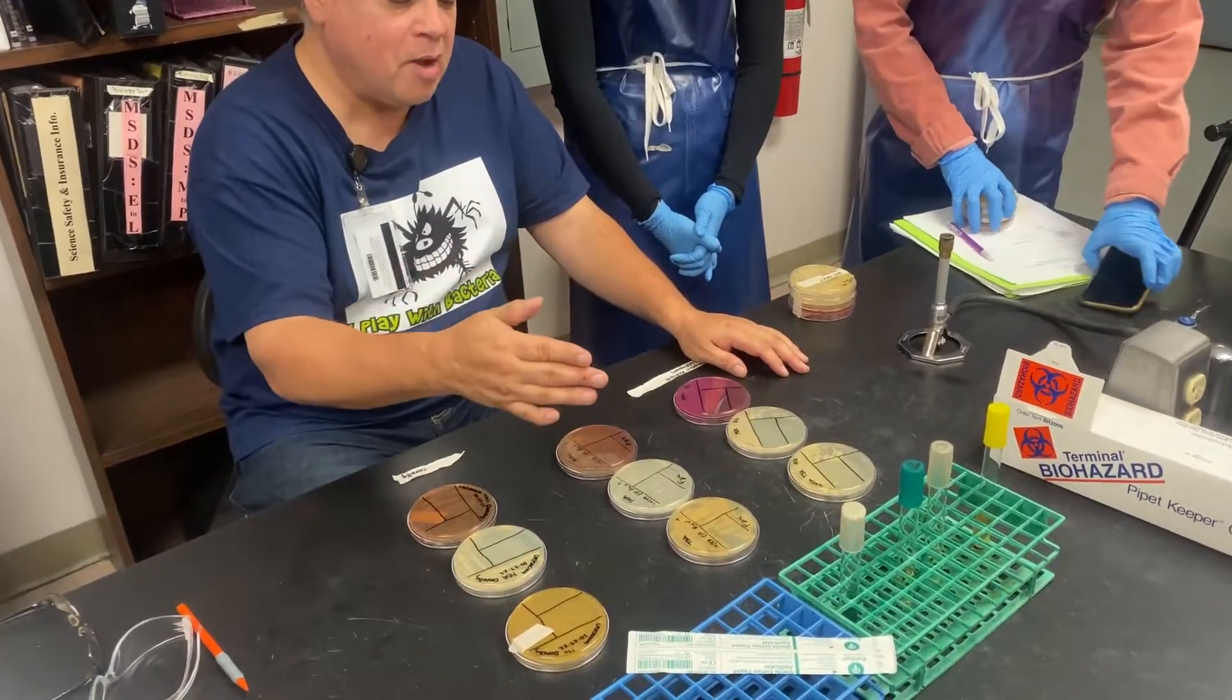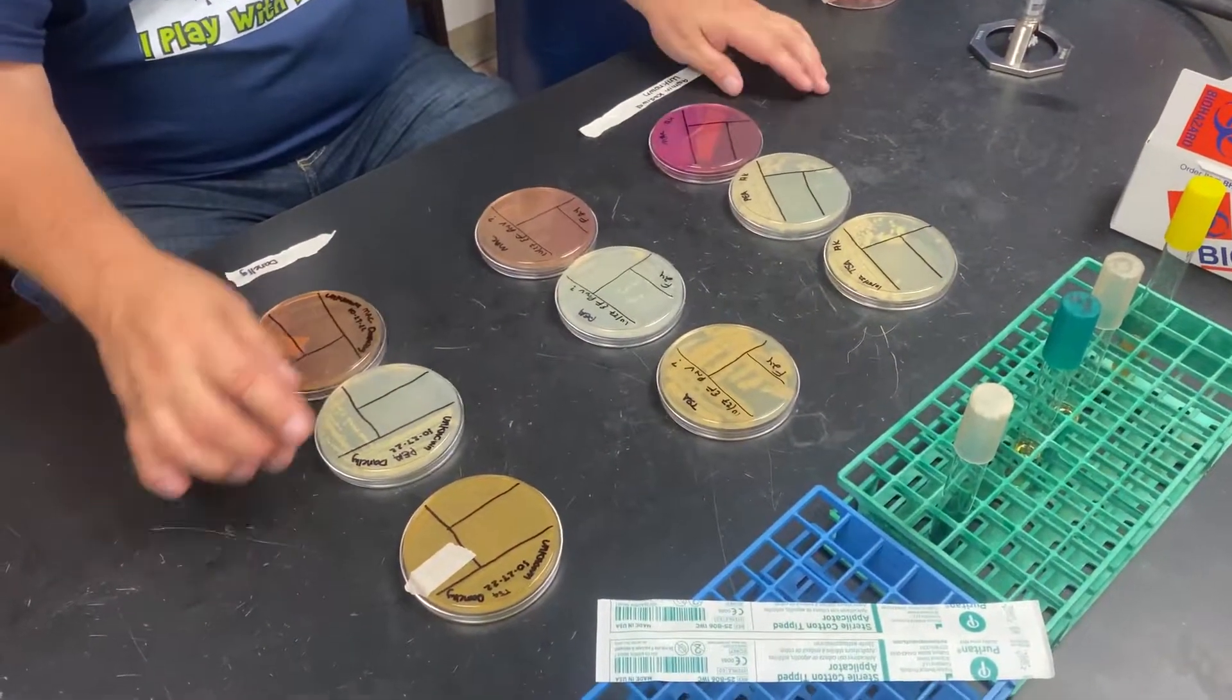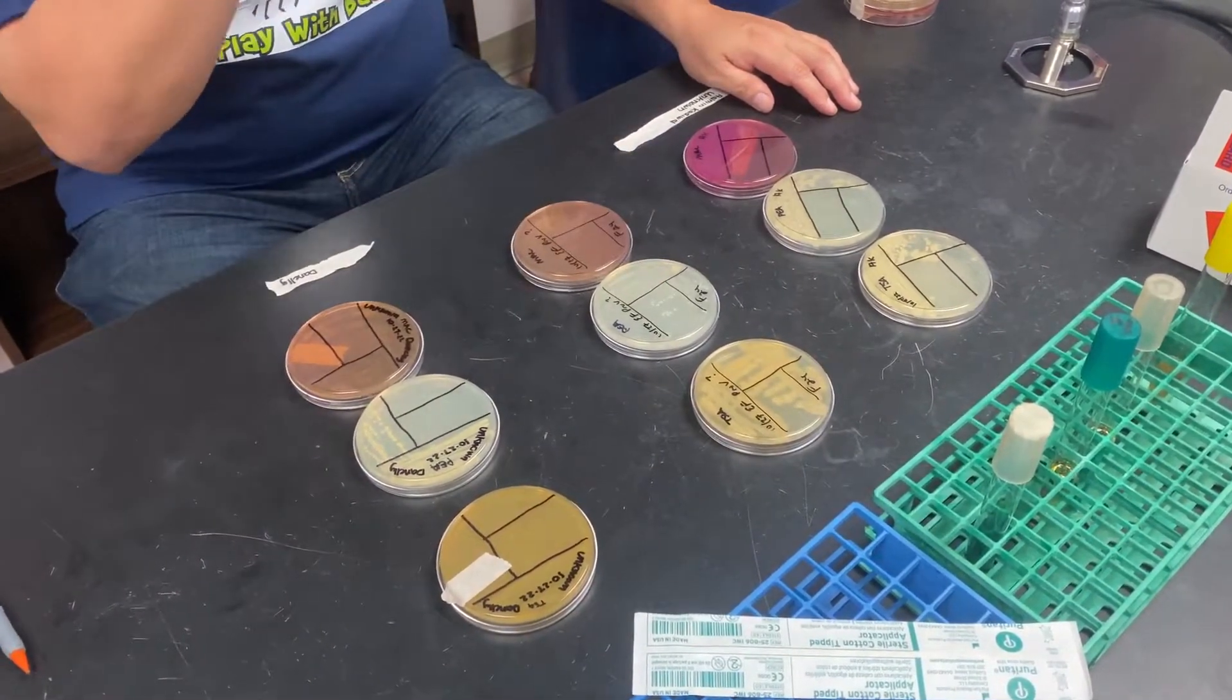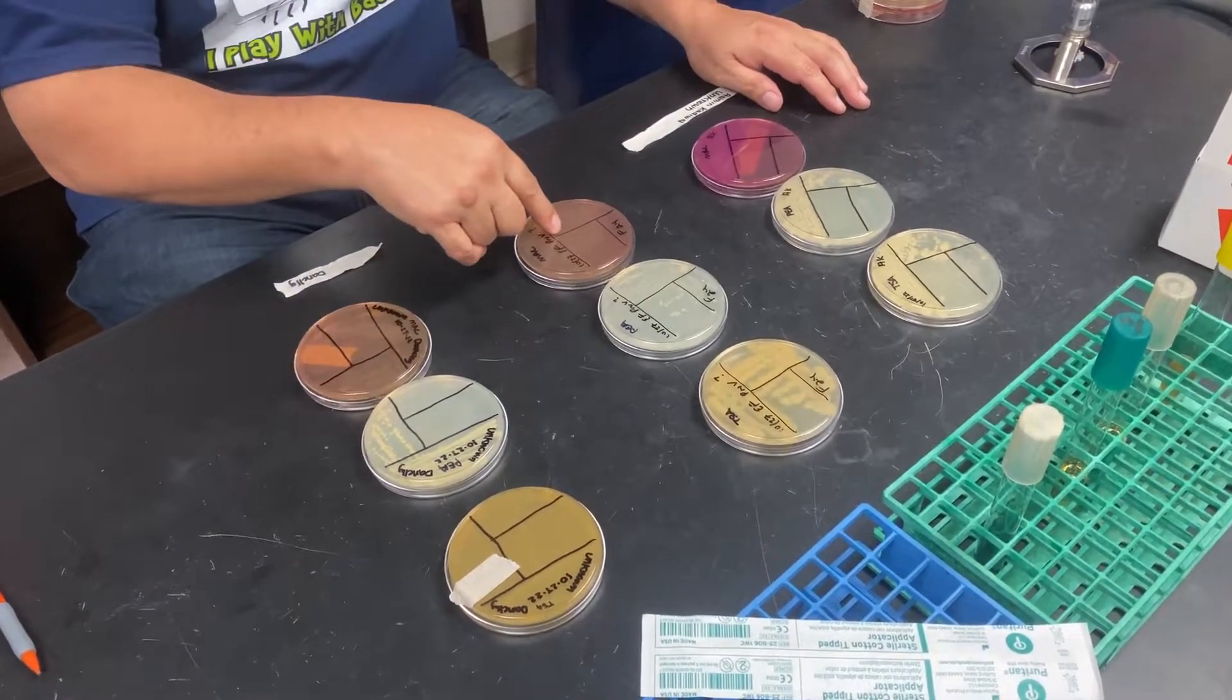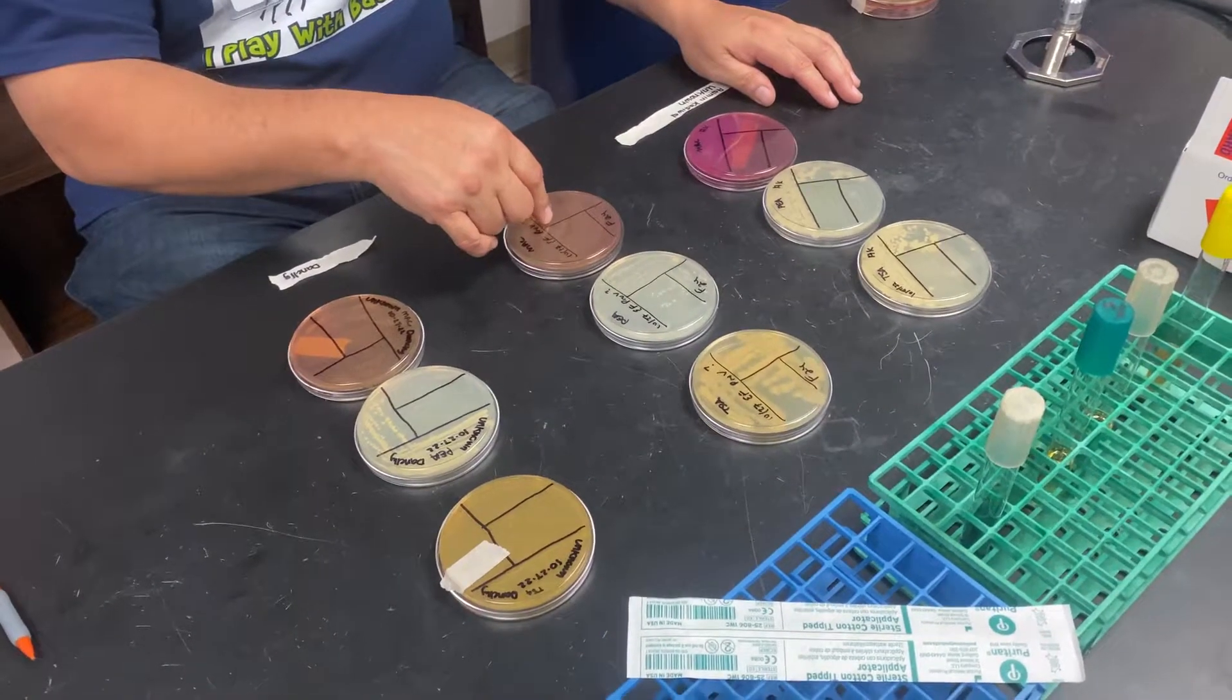So first of all, let's remind ourselves: TSA will grow what? Everything. PEA will grow what? Gram-positive, but it'll inhibit gram-negative. But it won't kill gram-negatives, right? And McConkie will do what? Gram-negative grow, inhibit gram-positive. Good.